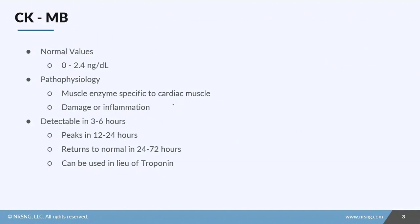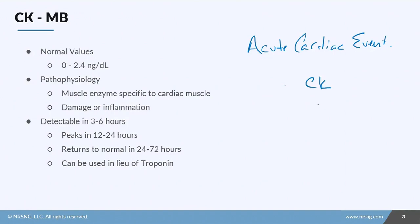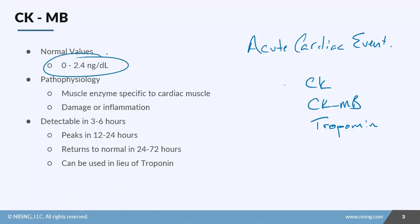CK-MB is something you'll want to monitor closely in cardiac patients. For patients having an acute cardiac event, you would expect to obtain cardiac enzymes — specifically CK, CK-MB, and troponin. The normal value for CK-MB is zero to 2.4 nanograms per deciliter. It's essentially undetectable in most patients, but because it's specific to cardiac muscle, it helps us determine if a heart injury is occurring.